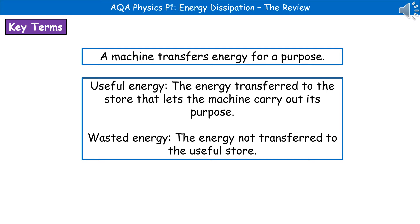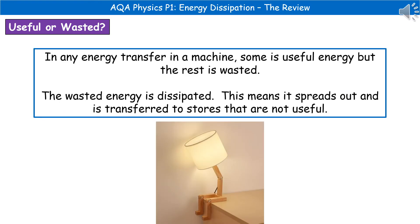In any given machine, some of the energy being put into it will go to the useful energy store to allow the machine to do its job, but a proportion will go to the wasted energy stores. So in any energy transfer in a machine, some is useful energy, but the rest is wasted. That wasted energy is dissipated, meaning it spreads out and is transferred to stores that are not useful.